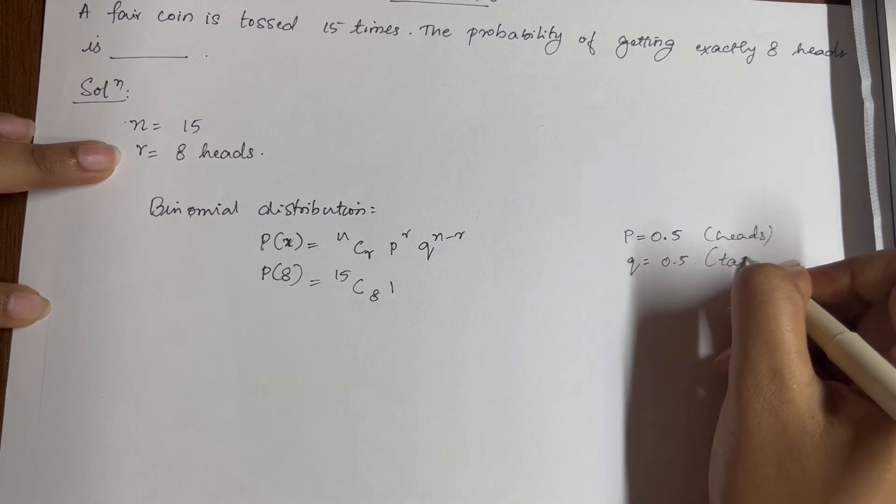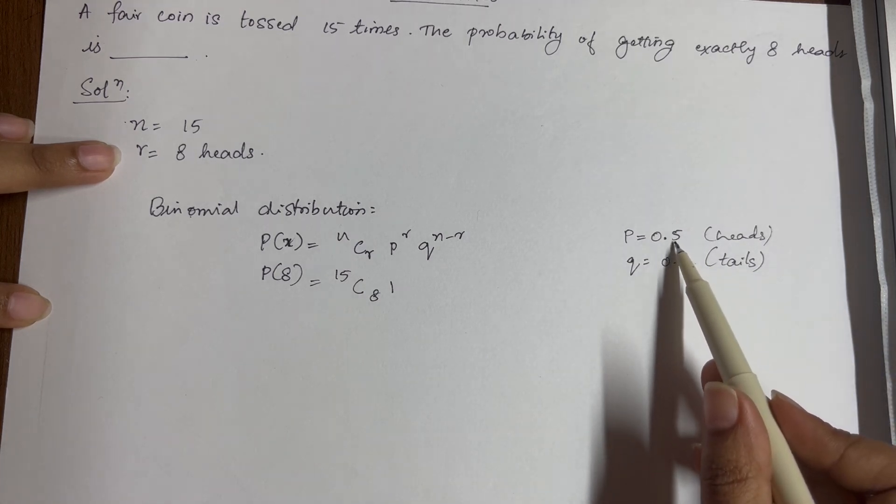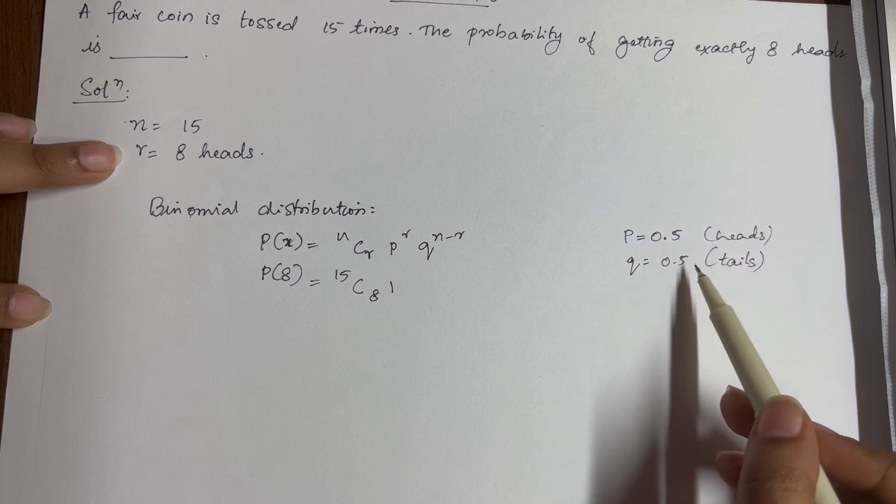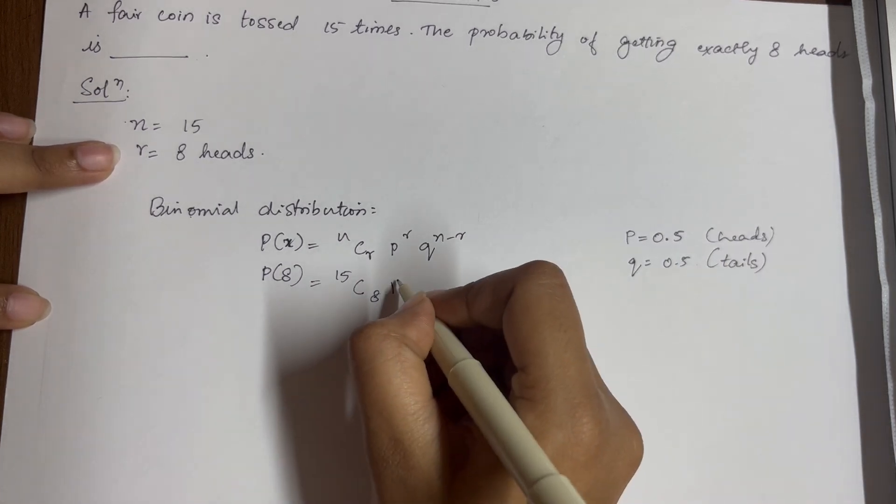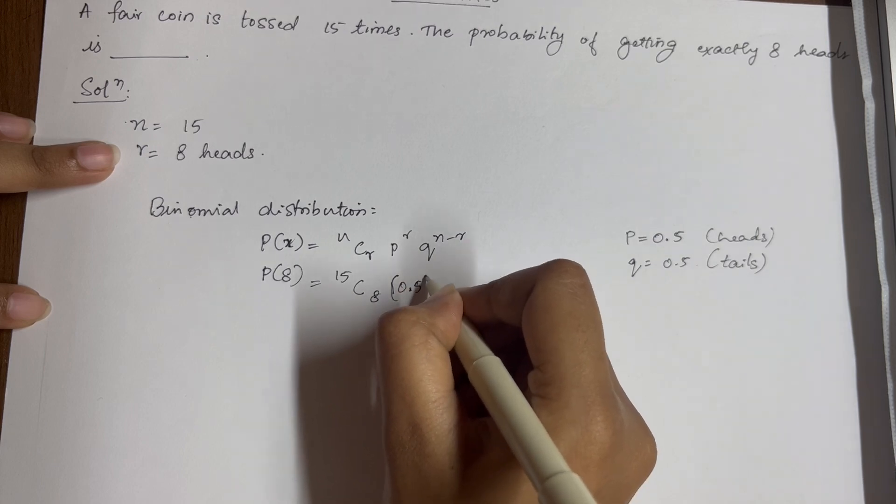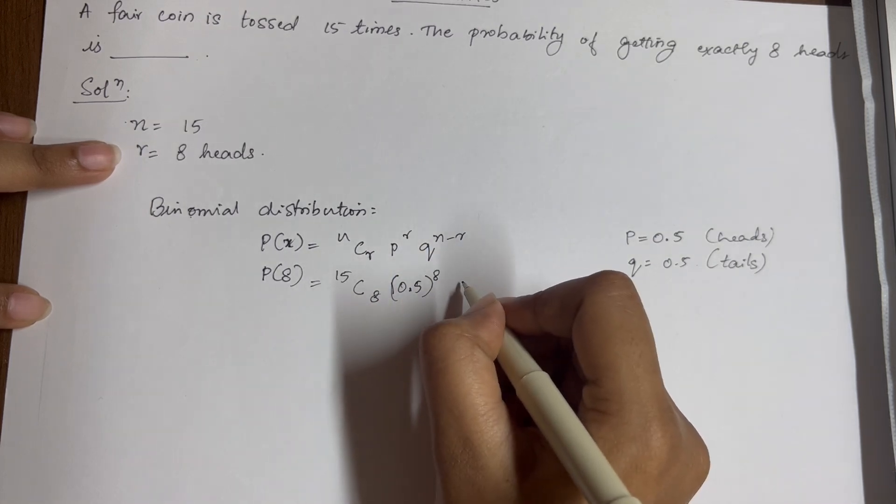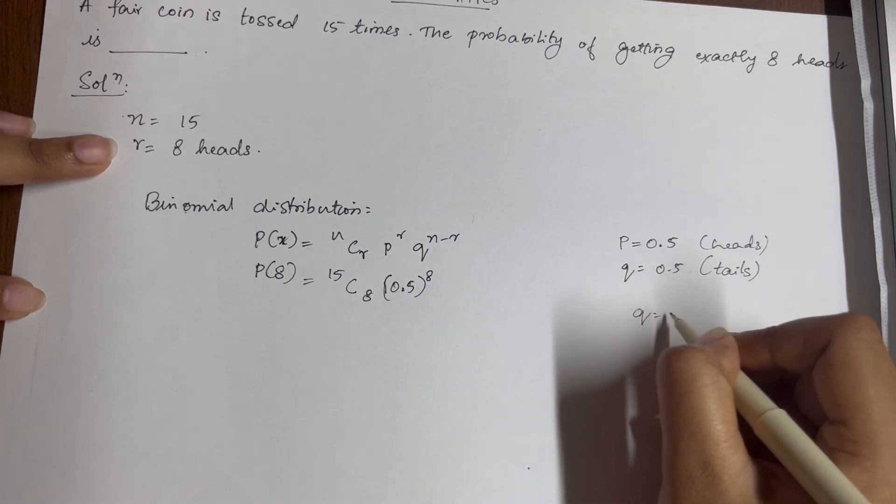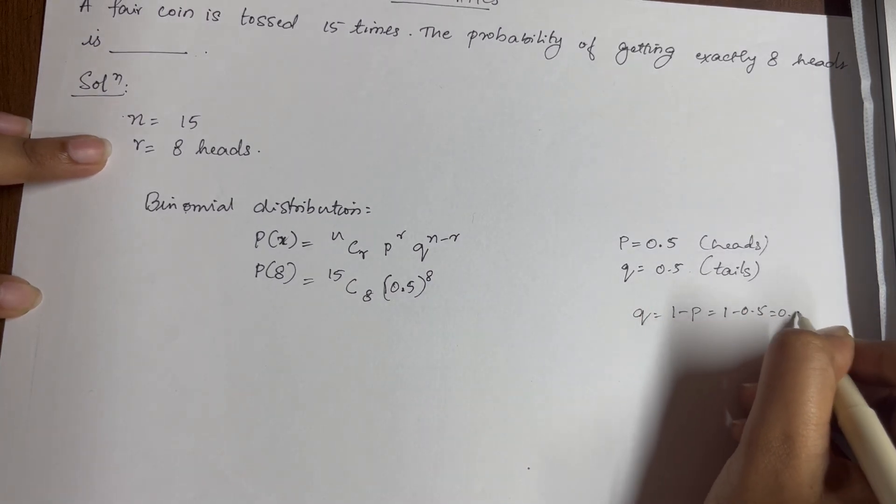When a coin is tossed, there is half, that is 0.5, is the probability of getting heads, and 0.5 is the probability of getting tails. So the p value will be 0.5 power r is 8, and q is 1 minus p, which is 1 minus 0.5, which is 0.5.